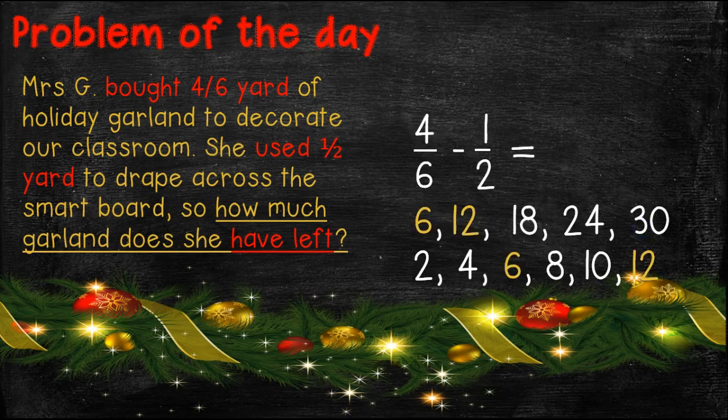So then we're going to go through and we're going to highlight or circle the multiples that each denominator has in common. And here we can see that 12 is also in common, but we're always going to go for the least common denominator. So in this case, it's going to be 6.